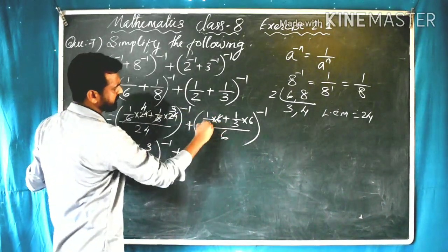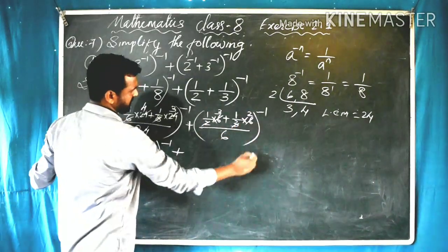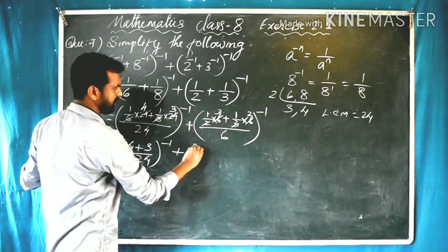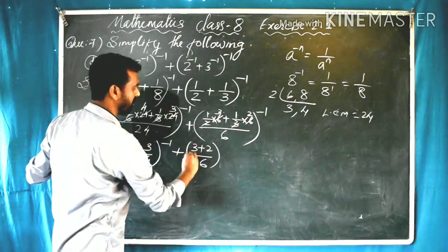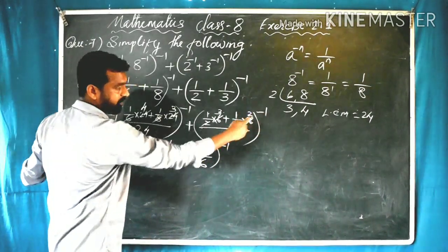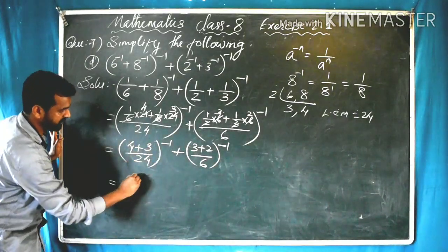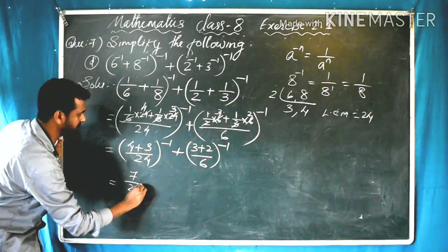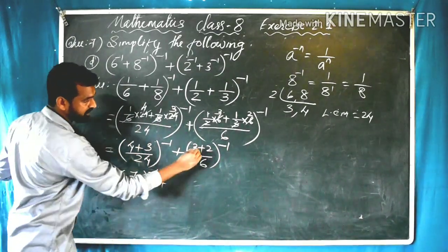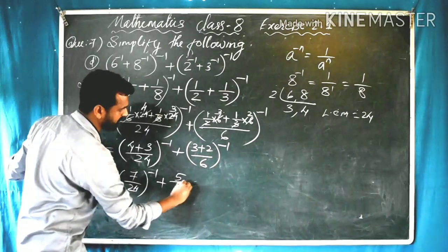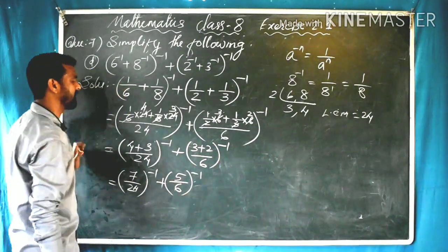So we now have 7/24 raised to minus 1, plus 5/6 raised to minus 1. We again use the formula P by Q raised to minus N equals Q by P raised to N to convert these negative exponents to positive. Applying it: 7/24 raised to minus 1 becomes 24/7 raised to 1, and 5/6 raised to minus 1 becomes 6/5 raised to 1.